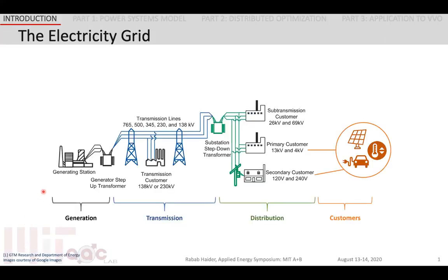In this picture, we follow the path of an electron in the electricity grid. We begin at large-scale generators, travel through the high-voltage transmission grid, and then enter into the distribution grid through a series of step-down transformers into the secondary distribution feeder, where customers like you and I are serviced. End users can include residential homes which may have photovoltaics on their rooftop, electric vehicles in their garage, and smart appliances such as thermostats connected to local energy management systems.